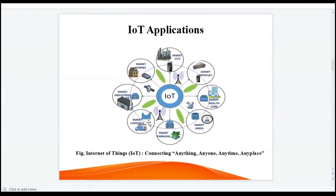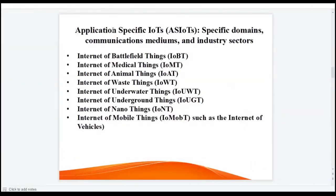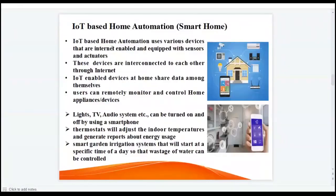Different applications of IoT include smart cities, smart vehicles, smart healthcare, smart grids, smart farming, smart logistics, smart industries, and smart homes. Internet of Things is connecting anything, anyone, anytime, any place. There are also application-specific IoTs related to specific domains, communication mediums, and industry sectors — for example, Internet of Battle Things, Internet of Medical Things, and Internet of Mobile Things such as the Internet of Vehicles.